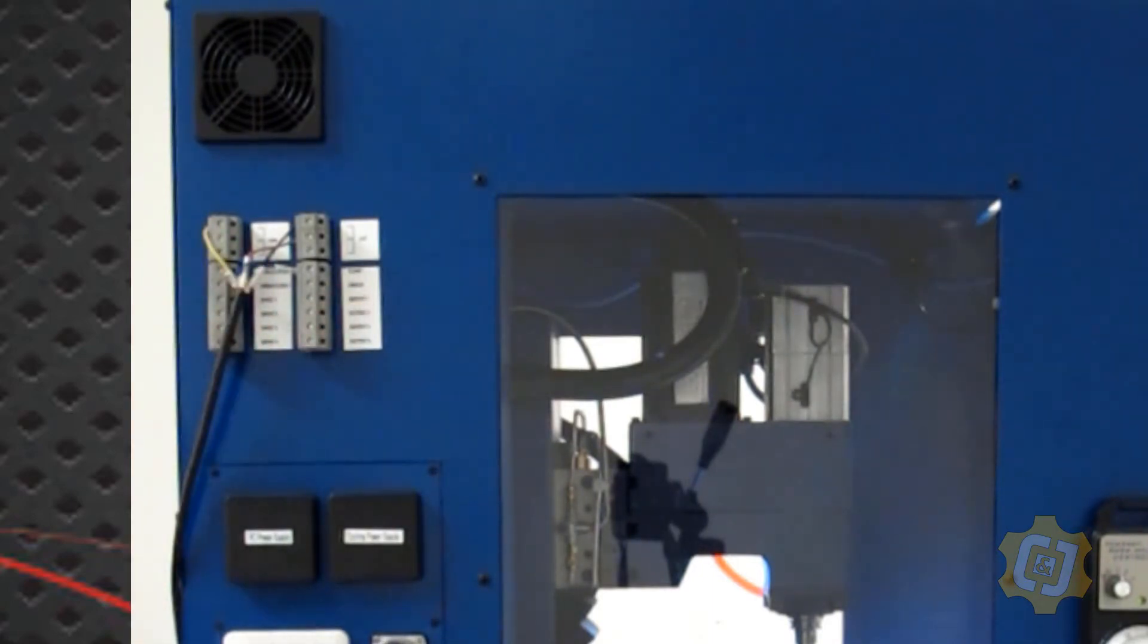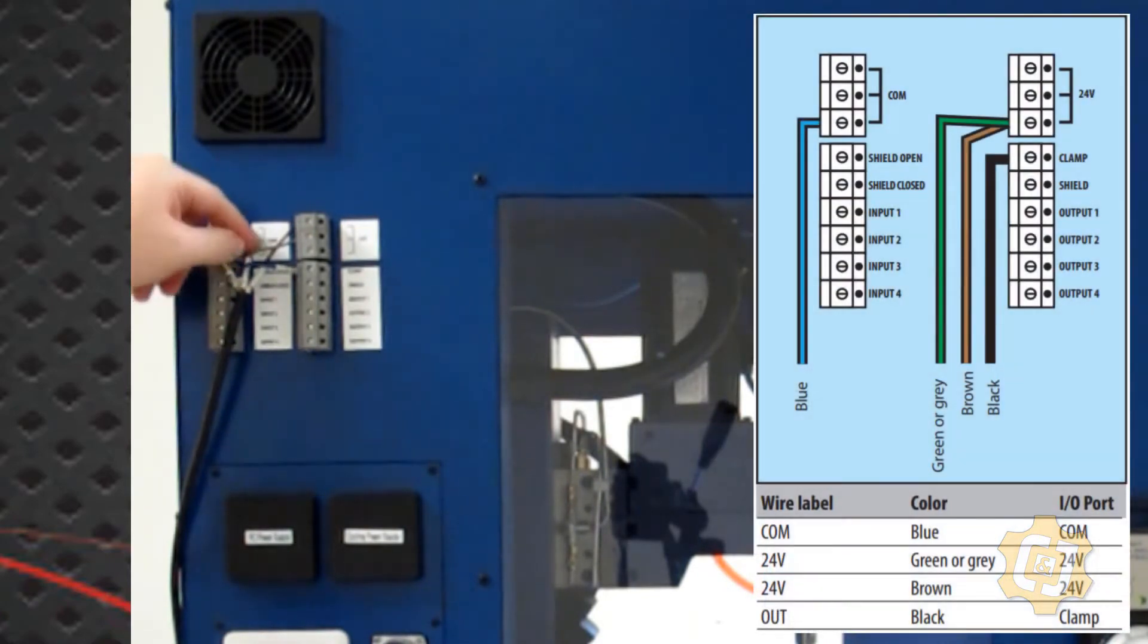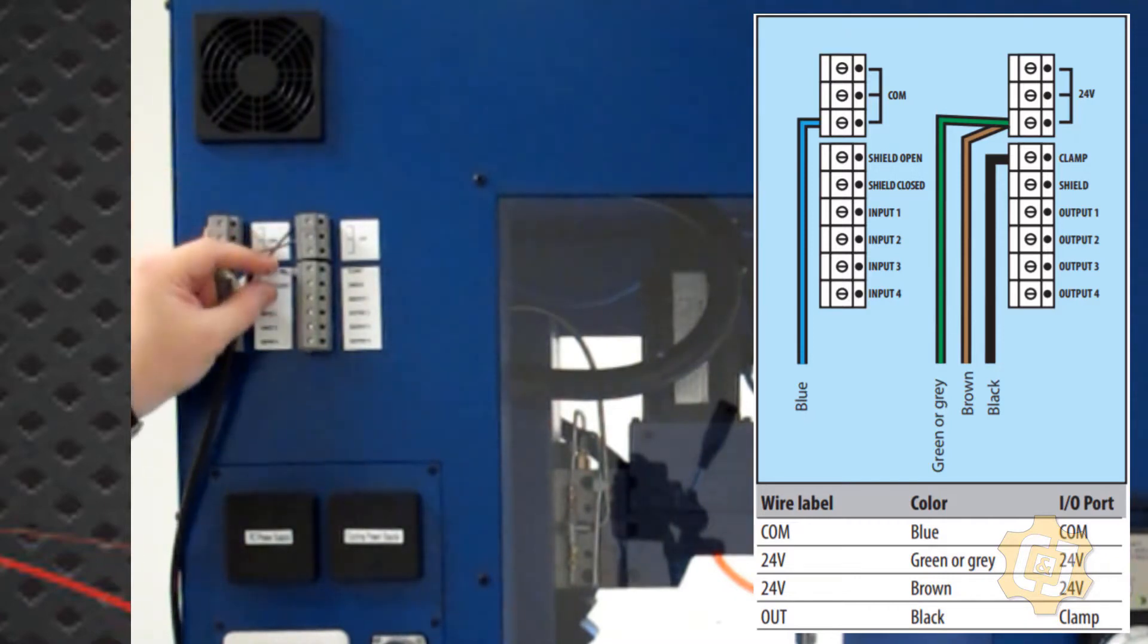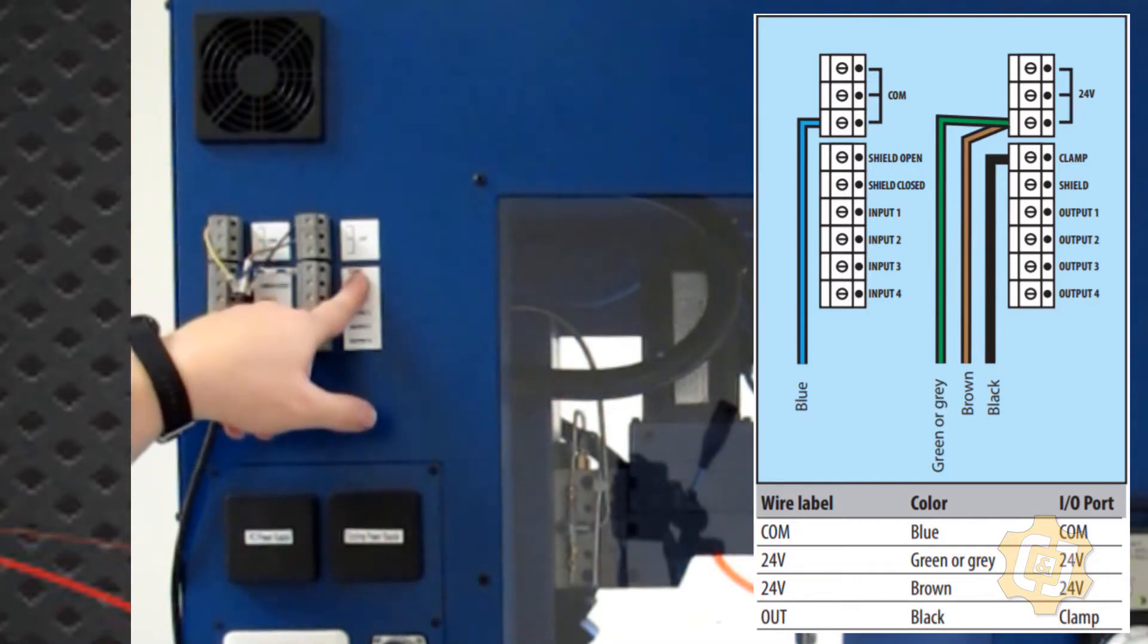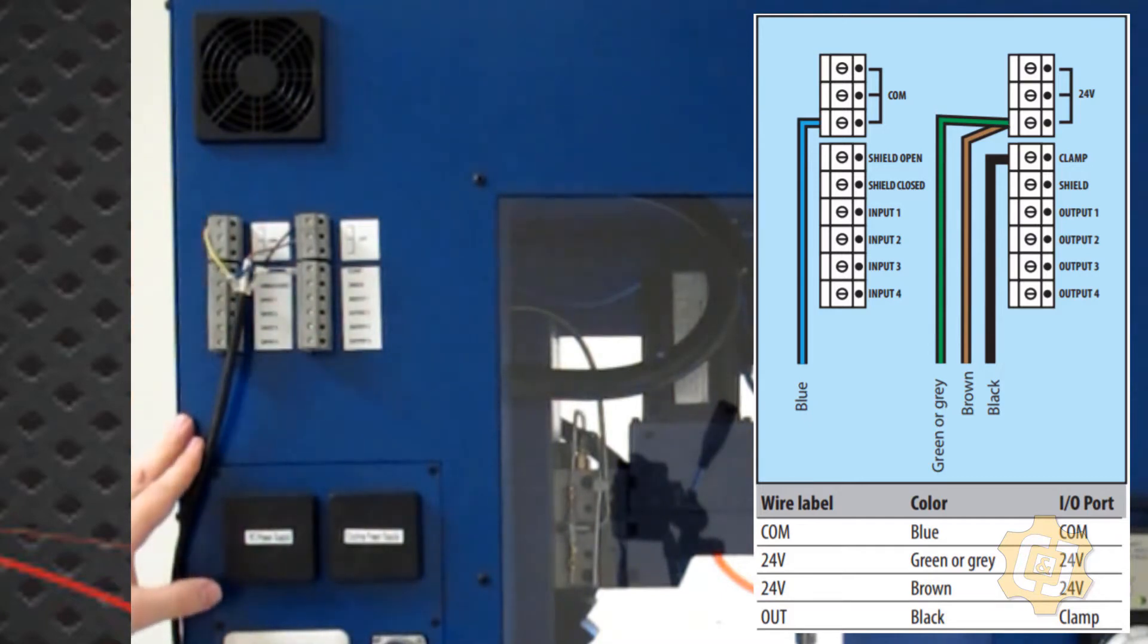Even though it says shield opener, shield closer, that must be plugged in internally. So I kind of just followed the layout or the labels that are on the wire. My yellow one went over to the common or my negative 24 volts. I had two of them that went over to the positive 24 volts and then I had my signal wire that went over to the clamp. So that's the only one that I actually had to plug in.